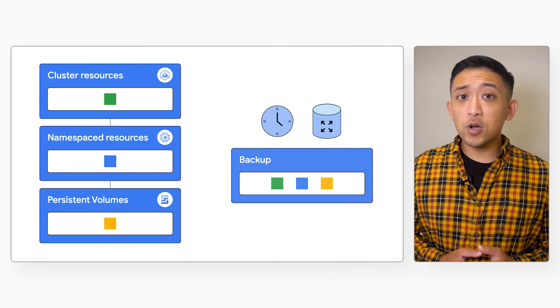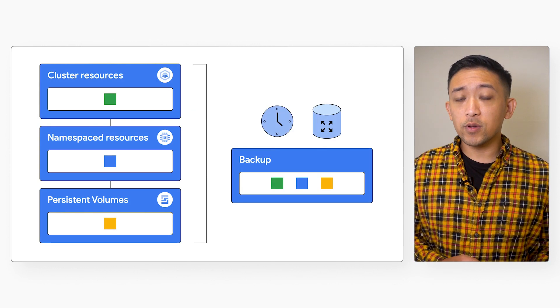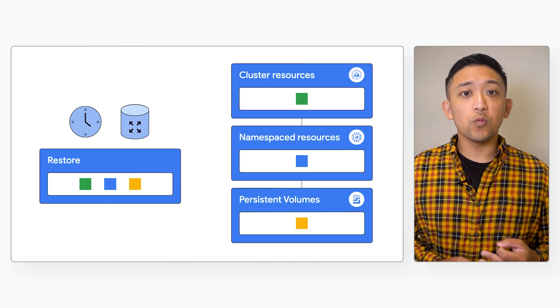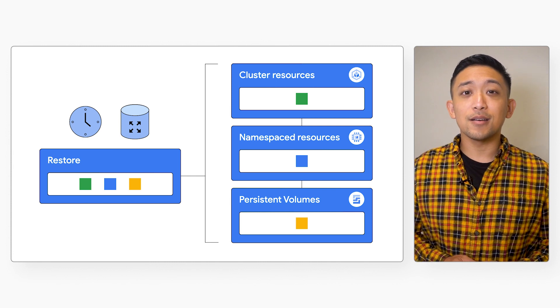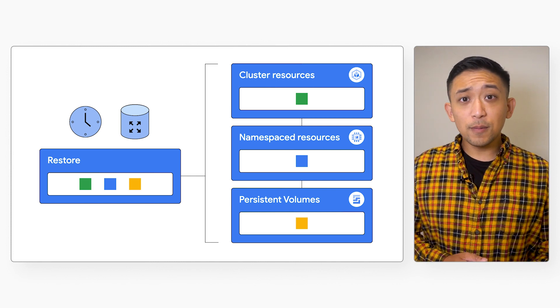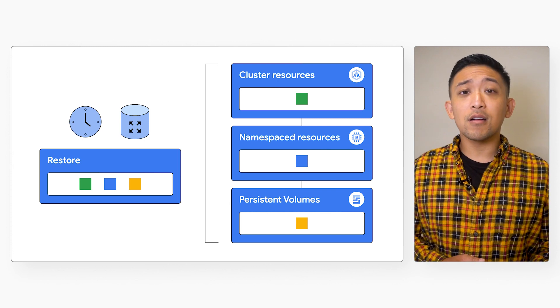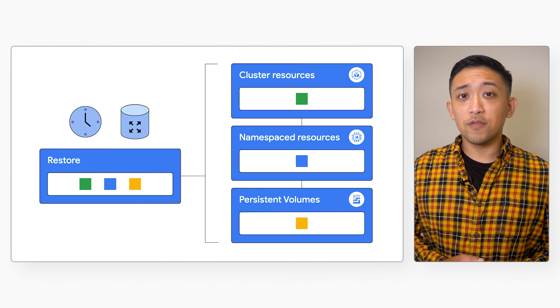So these users may want to perform point-in-time backups of Kubernetes resources and their workload data in their cluster, and then have the control to choose what to restore and where to restore from these backups. This helps them minimize data loss in case of things like user error, application failure, or disaster, and helps them meet their recovery objectives.